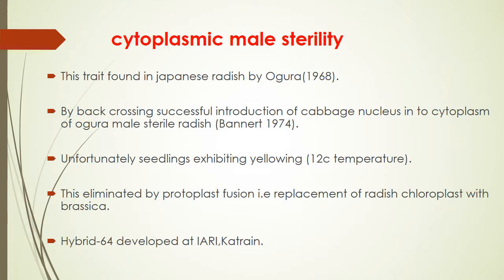Cytoplasmic male sterility: this trait was found in Japanese radish by Ogura in 1968. By backcrossing, successful introduction of cabbage nucleus into the cytoplasm of Ogura male-sterile radish was achieved. Uniformity in seedlings exhibited yellowing at 12°C temperature. This was eliminated by protoplast fusion — replacement of radish chloroplast with Brassica oleracea. Hybrid 64 was developed at IARA Katrain.